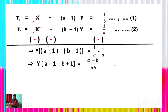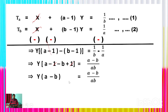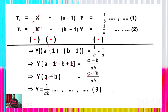After cancellation we get y × (a−b) = (a−b)/ab. Again we can cancel (a−b) on the left-hand side and (a−b) on the right-hand side. After cancellation, we get y = 1/(ab). This is the value of y, which is the common difference of the arithmetic progression.